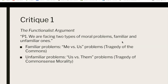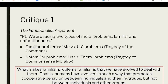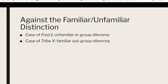Greene claims that many of these unfamiliar dilemmas arise with social and technological developments such as global warming, terrorists using weapons of mass destruction, global poverty, bioethical problems, the place of religion in public life, capital punishment, and abortion. What makes familiar problems familiar is that we have evolved to deal with them — humans have evolved in ways that promote cooperative behavior between individuals and their in-groups, but not between individuals and other groups. So what makes in-group dilemmas familiar and out-group dilemmas unfamiliar?